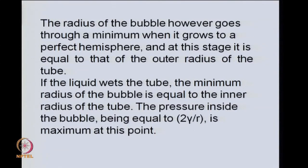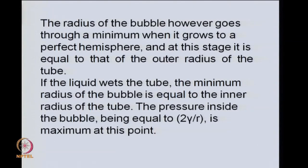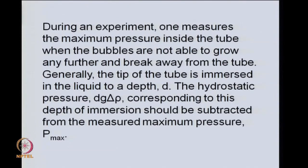Correspondingly, the pressure inside the bubble — from our earlier analysis — equals 2*gamma / R, where R is the bubble radius at the point where the radius is minimum and the pressure is maximum. During a typical experiment, one measures the maximum pressure inside the tube when the bubbles are no longer able to grow and break away. In general, the tip of the tube is immersed in the liquid to a certain depth D, and the hydrostatic pressure equivalent to D × g × delta_rho should be subtracted from the measured maximum pressure for accurate results.